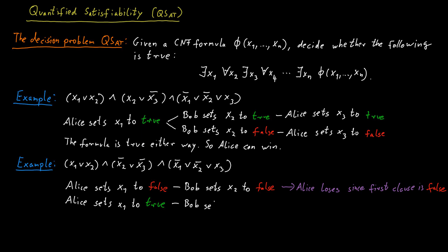But if she sets x1 to true, Bob will set x2 to true as well. And the problem for Alice now is that if we look at the remaining two clauses, there are no good choices for her for the value of x3.